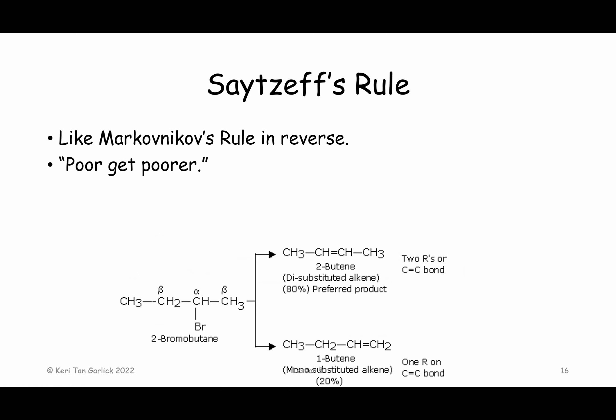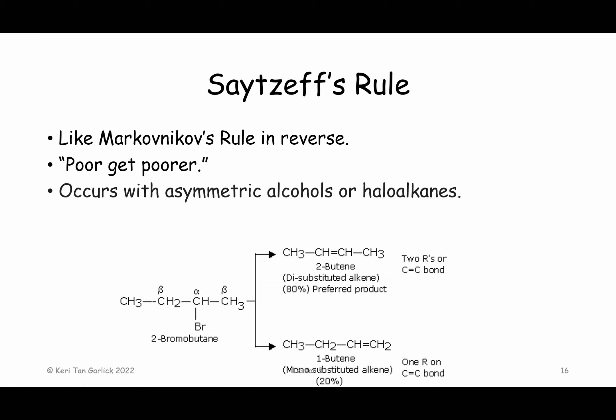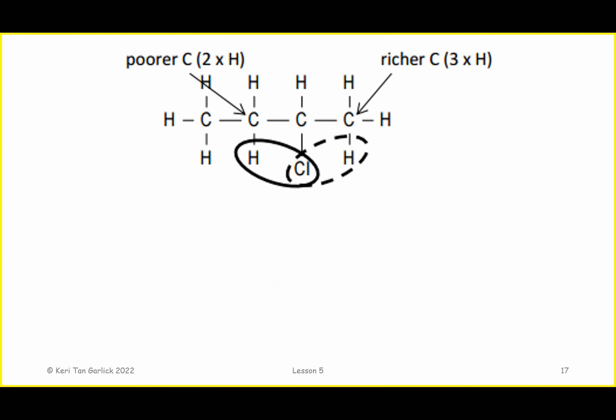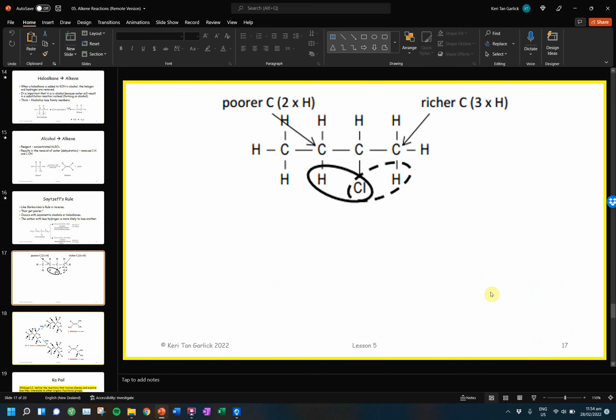This leads into Zaitsev's rule, also known as reverse Markovnikov's rule or anti-Markovnikov's rule. In this instance, we are still counting the hydrogen numbers, but the one with the fewer number of hydrogens is more likely to lose another one. Again, we're looking for things that are not symmetrical, because if it's symmetrical you still get the same product. This applies to alcohols or haloalkanes.